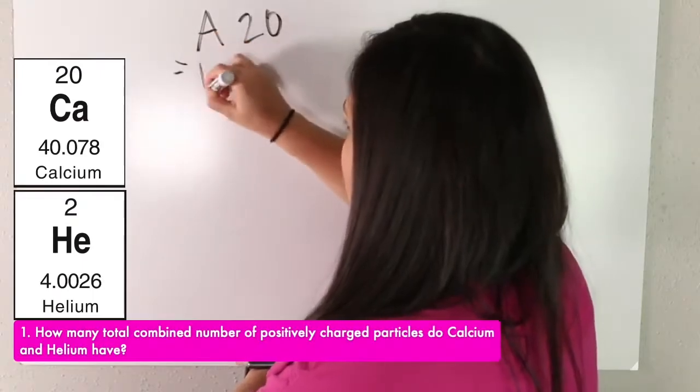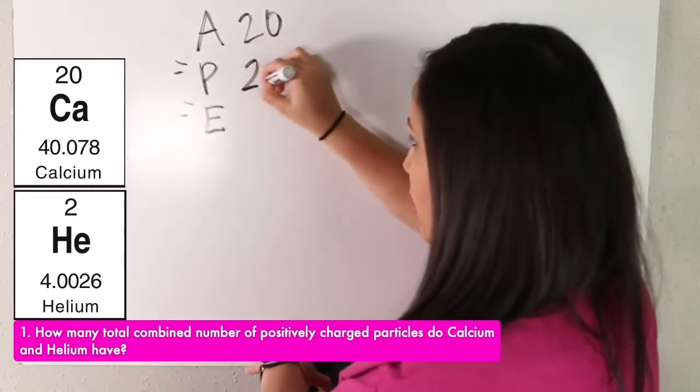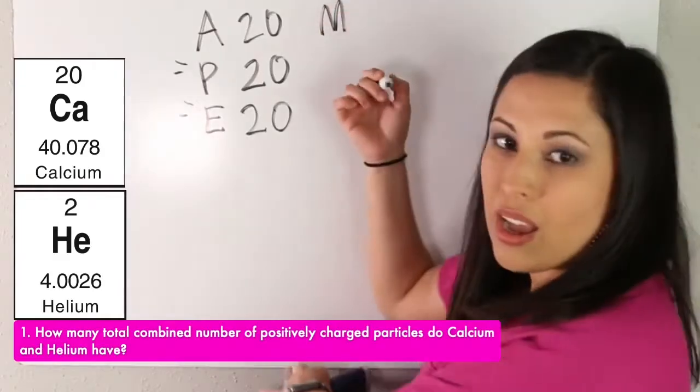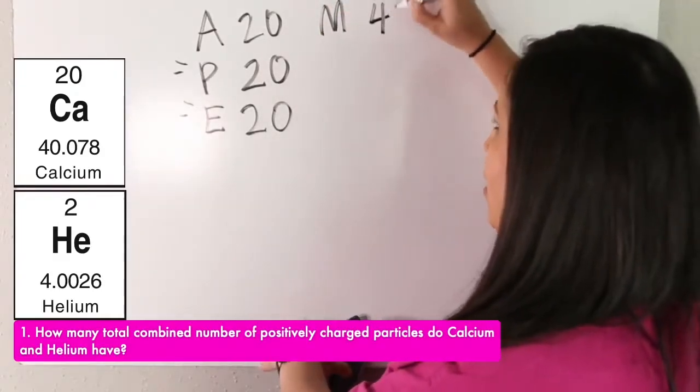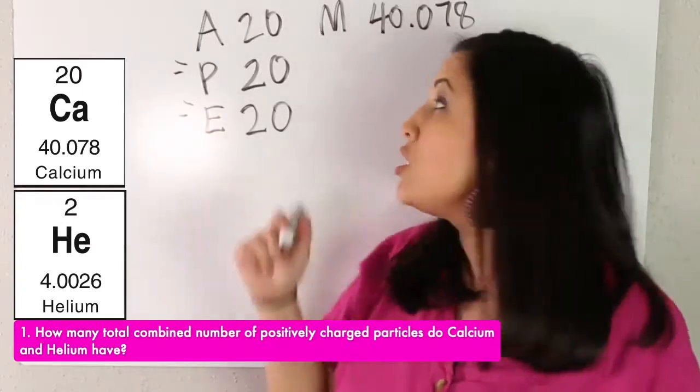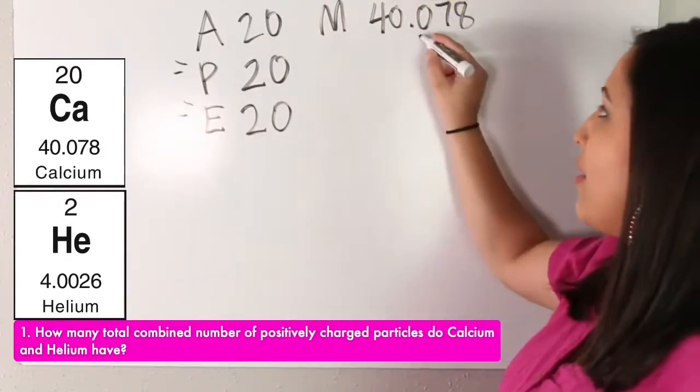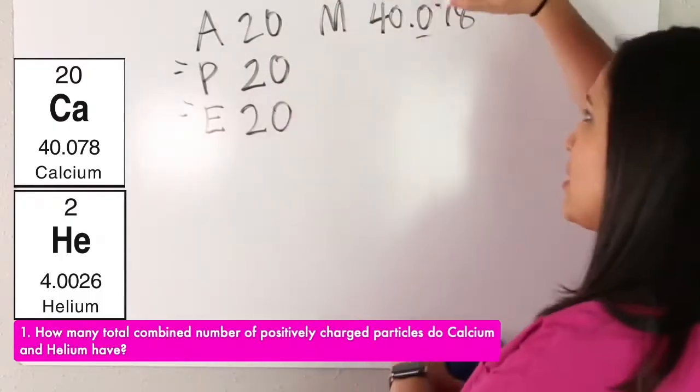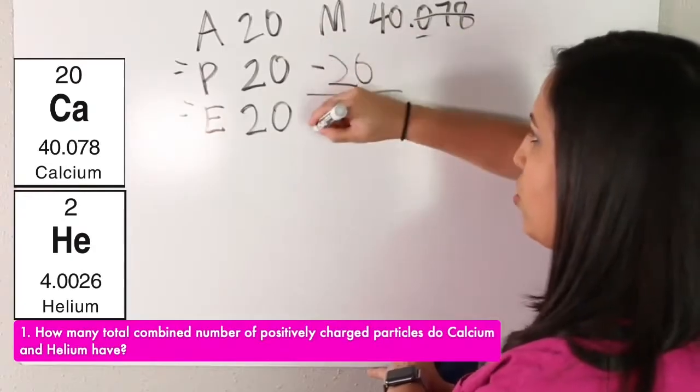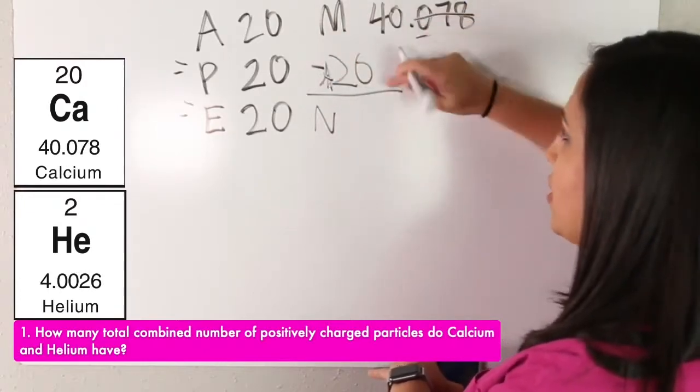Remember, A equals P equals E. So our atomic number is 20, which means our protons are 20, and our electrons are 20. If we had our mass, our mass is 40.078. Remember, how we round, we always round our mass to a whole number, so we get rid of the numbers after the decimal. If it's five or more, we raise the score and we would add to this number. If this number is four or less, we get rid of the rest, and our mass would be 40, minus our atomic number. So our neutrons would be 40 minus 20, which is 20.